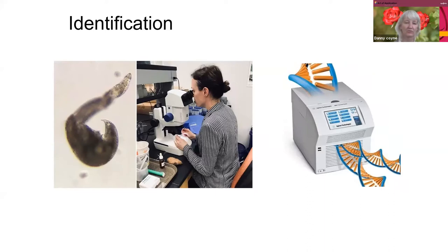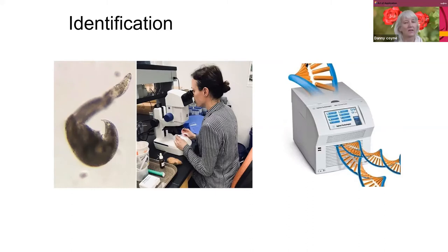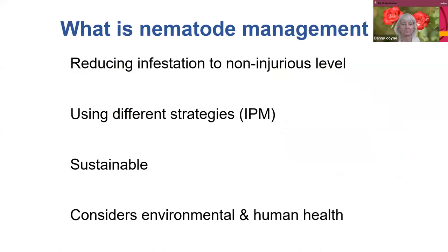We are training to do this work, amongst other things. Once you find plant parasitic nematodes, there are certain species that we have to differentiate. It's quite a process, but luckily we also have molecular methods that help us do it quicker and more accurately, as long as you know what you've got.